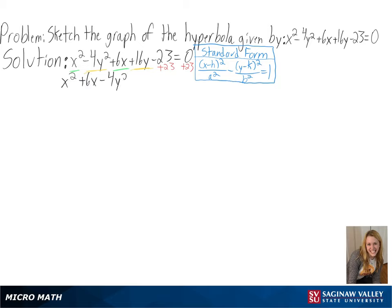The first part of our solution is to put our equation in standard form. We will group our x's and y's together and move the 23 to the other side of the equation. We are then able to factor out a -4 for our y's.